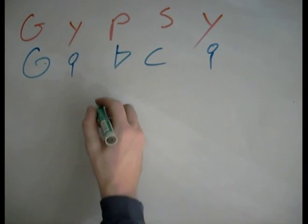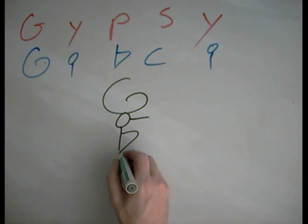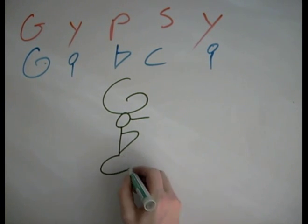So let's see how we can connect these. The simplest possible way to do this would be G, Y, P, and then S, Y.